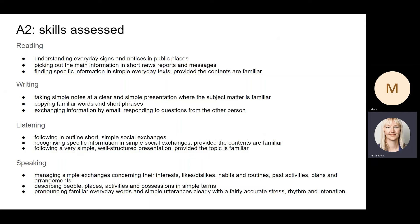A2 students should be able to manage simple exchanges concerning their interests, likes and dislikes, habits and routines, past activities, plans and arrangements in very simple language. They should be able to describe people, places, activities and possessions in very simple terms. And they should be able to pronounce familiar everyday words and simple phrases clearly, with a fairly accurate stress, rhythm and intonation.